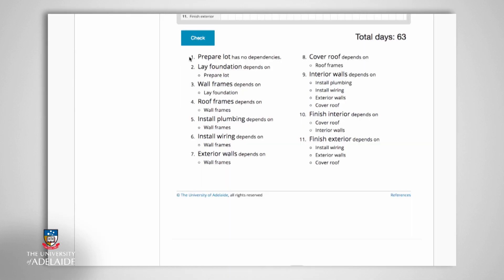How might we reduce the current project duration of 63 days, given we still have all 11 activities to complete? In order to reduce the amount of time it takes to complete this project, we will need to consider the existence of dependencies.